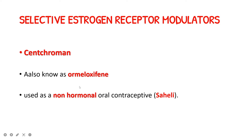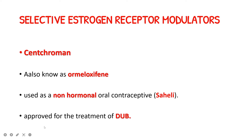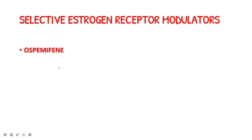Coming to centchromen, also known as ormeloxifen: it is used as a non-hormonal oral contraceptive, also called Saheli. In exams, if asked which is the non-hormonal oral contraceptive, the answer is centchromen or ormeloxifen, also called Saheli. It is also approved for the treatment of dysfunctional uterine bleeding. So the two uses of centchromen or ormeloxifen are: non-hormonal oral contraceptive and dysfunctional uterine bleeding.